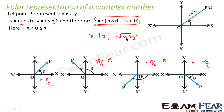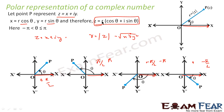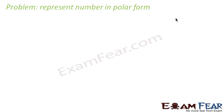So r equals root of x² plus y² for z equal to x plus iy. Then we write z equals r cos θ plus i sin θ, where θ is the angle subtended by the point with the positive x-axis. Please note it is the positive x-axis — we always consider the angle with the positive x-axis only. So z equals r cos θ plus i r sin θ, where r is the modulus, root of x² plus y², and θ is the angle of line PO with the positive x-axis, where O is the origin and P is the point.